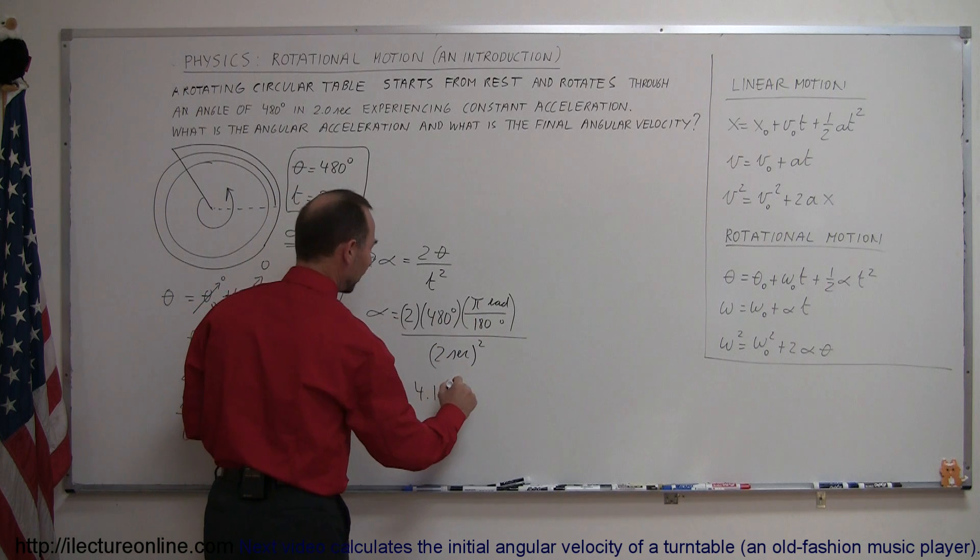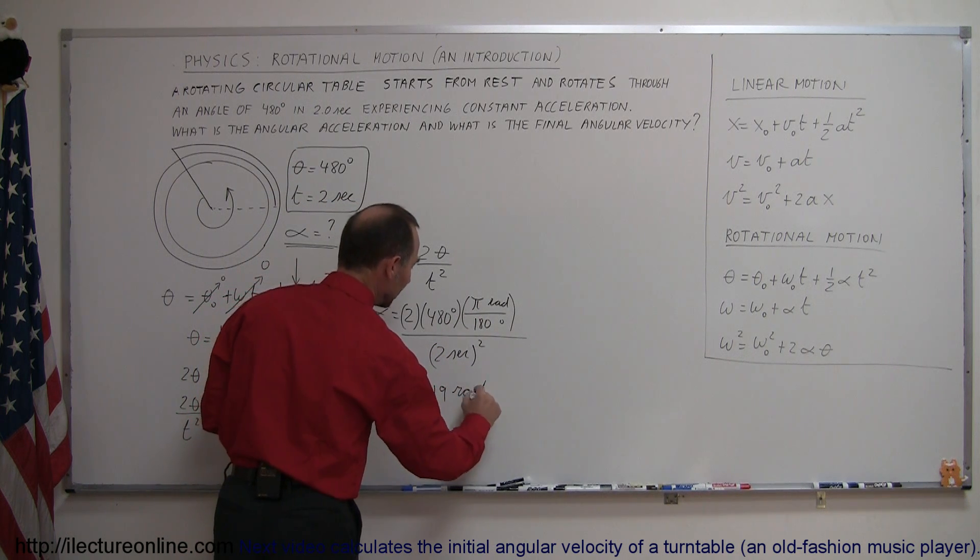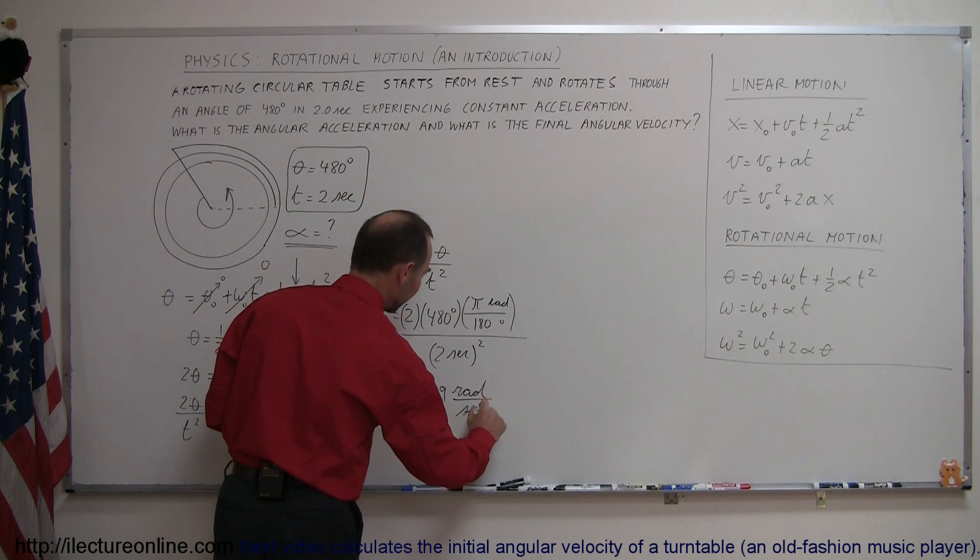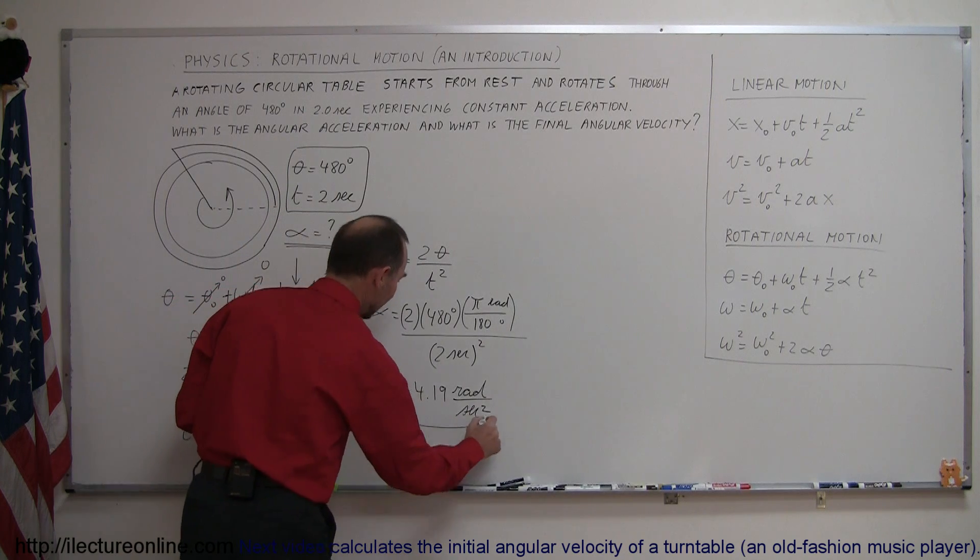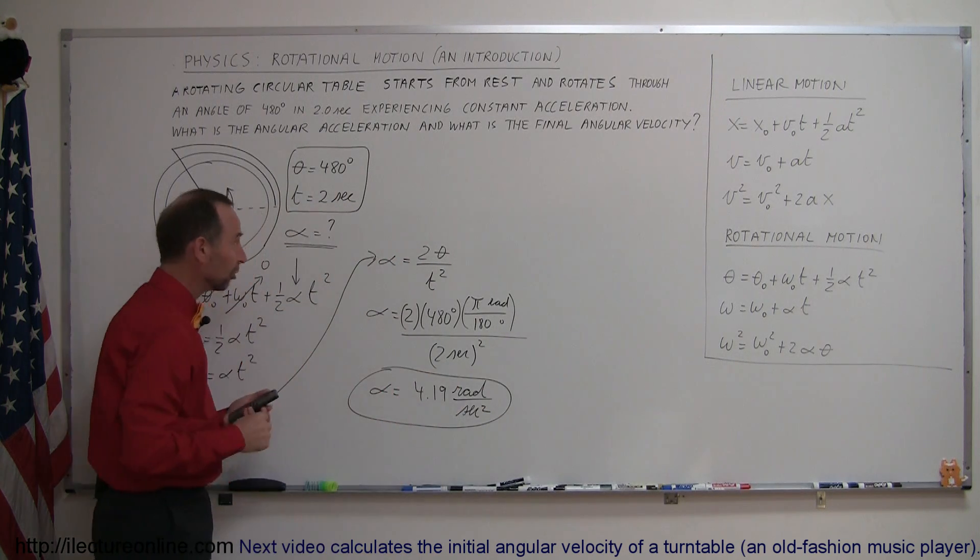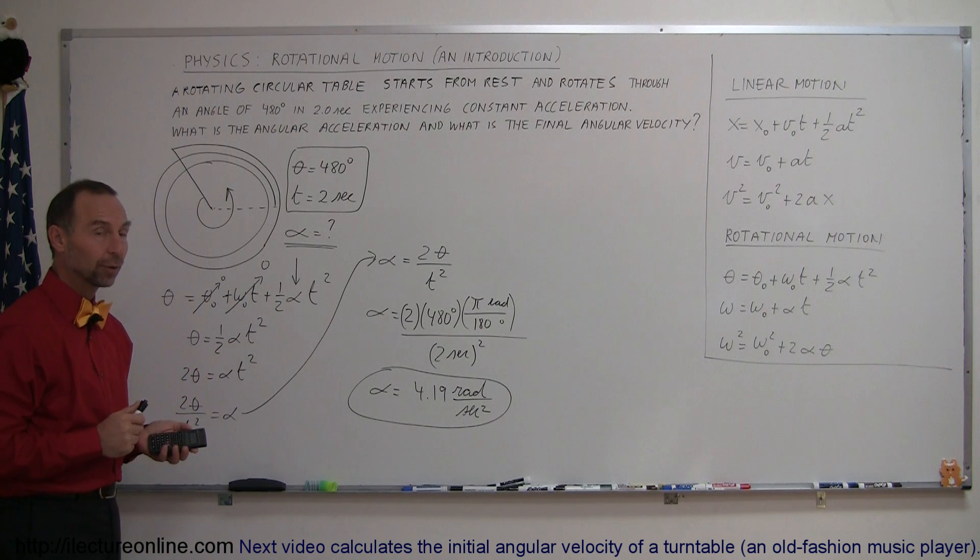This is radians per second squared. Again, radians, we don't really have to write it, but I like to have it there for clarity. So here we have found our angular acceleration in radians per second squared.